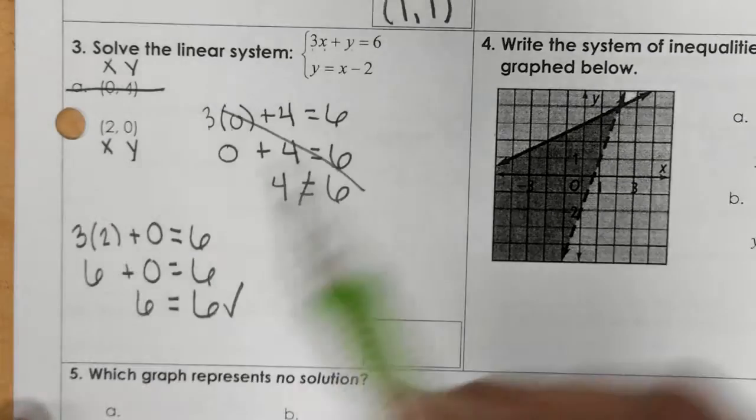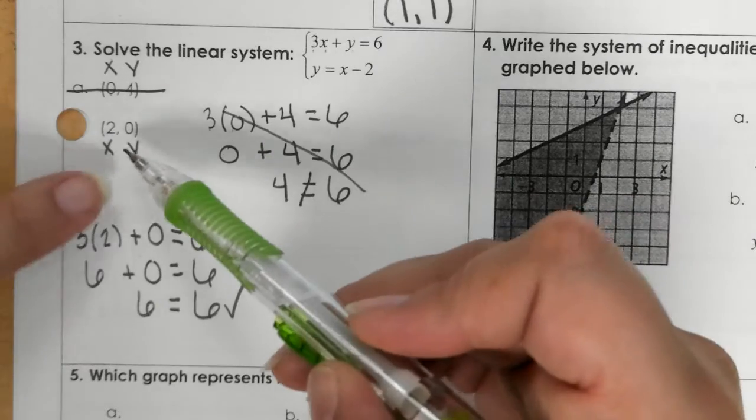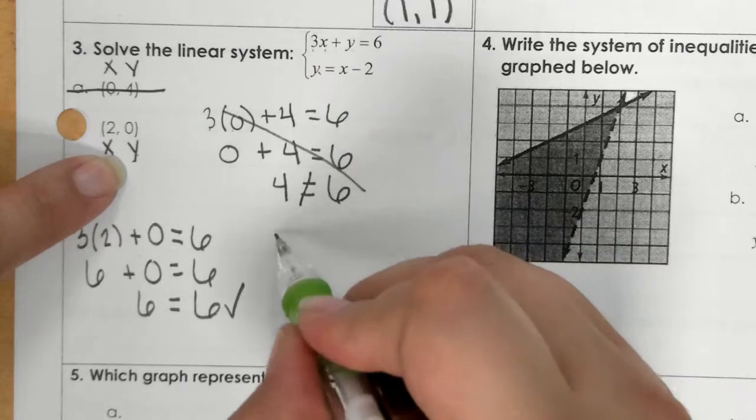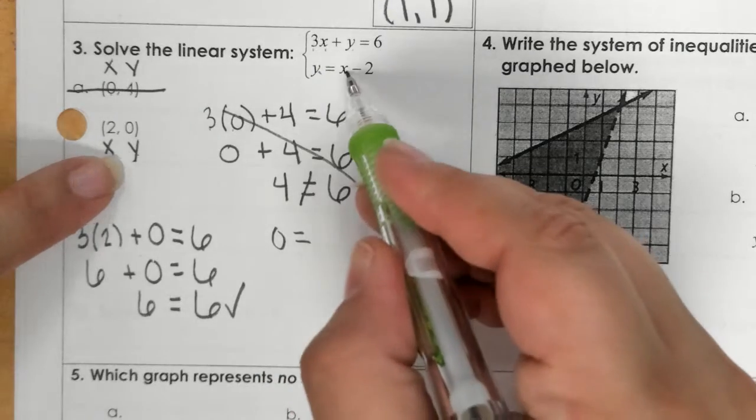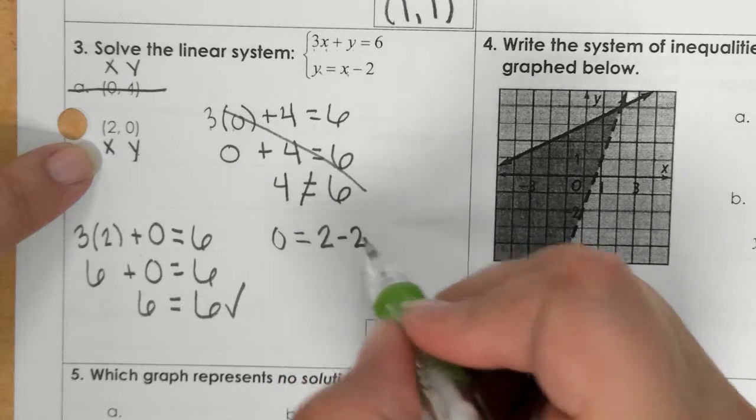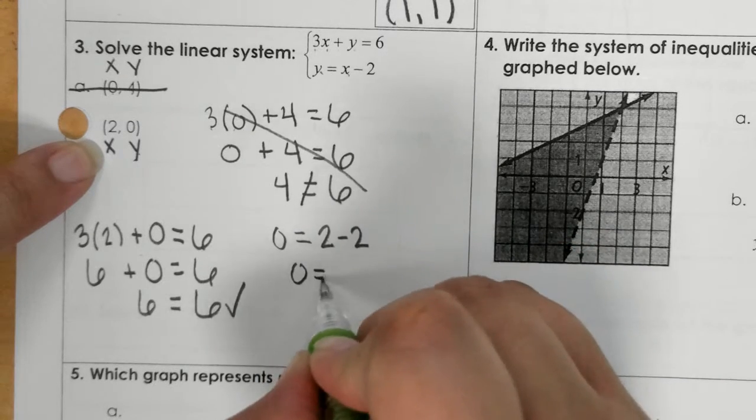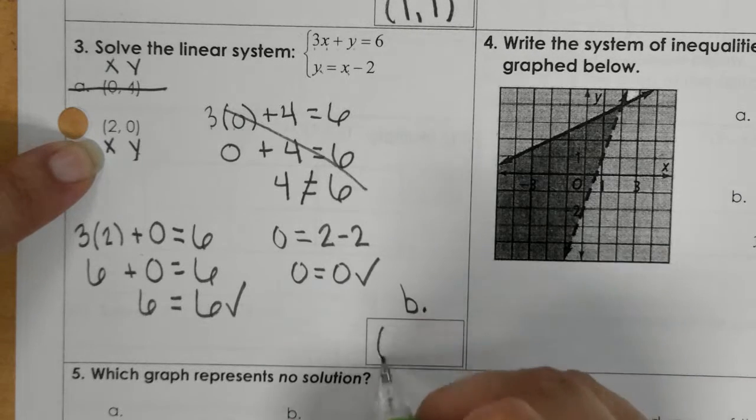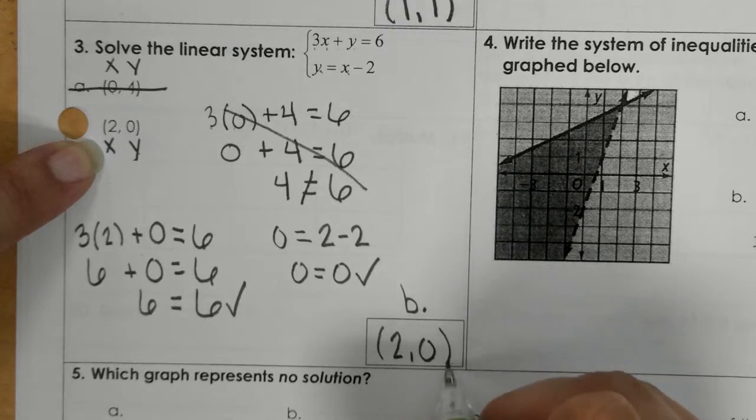So we need to also make sure we plug it into the second equation. So y is 0 in this case and then x is 2 minus 2. And 2 minus 2 is 0. So again, it's true. So that means that B is my solution. 2, 0.